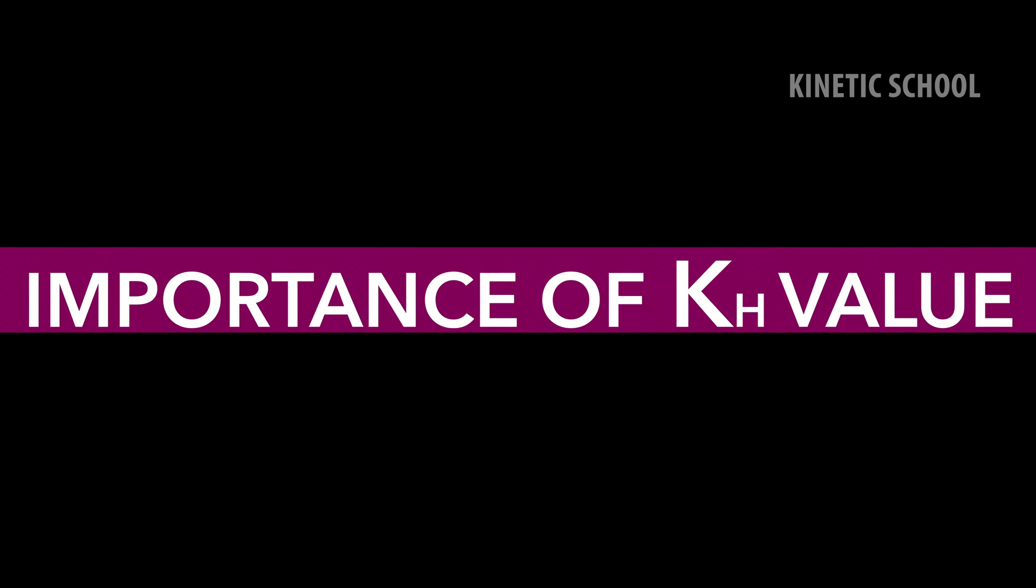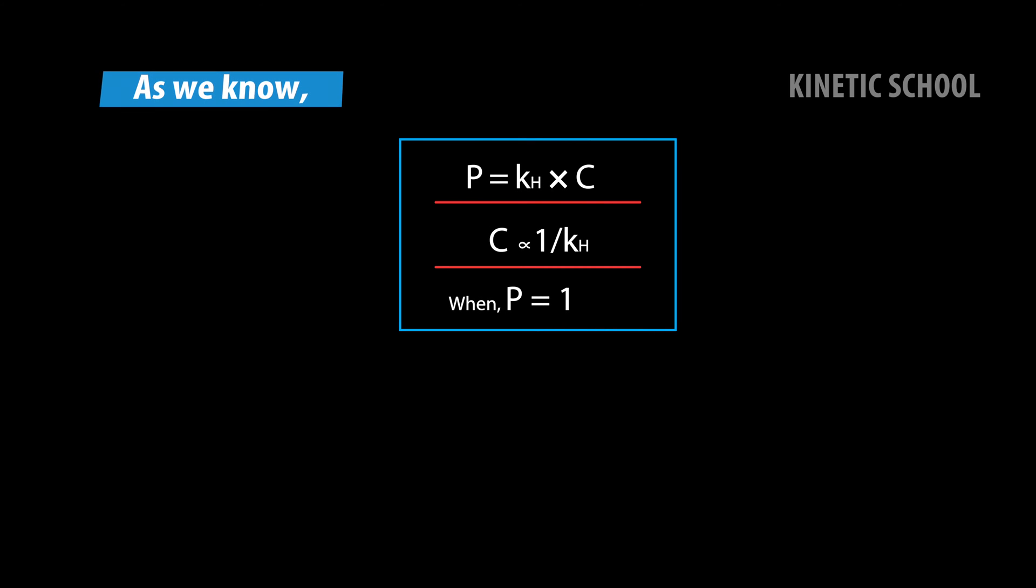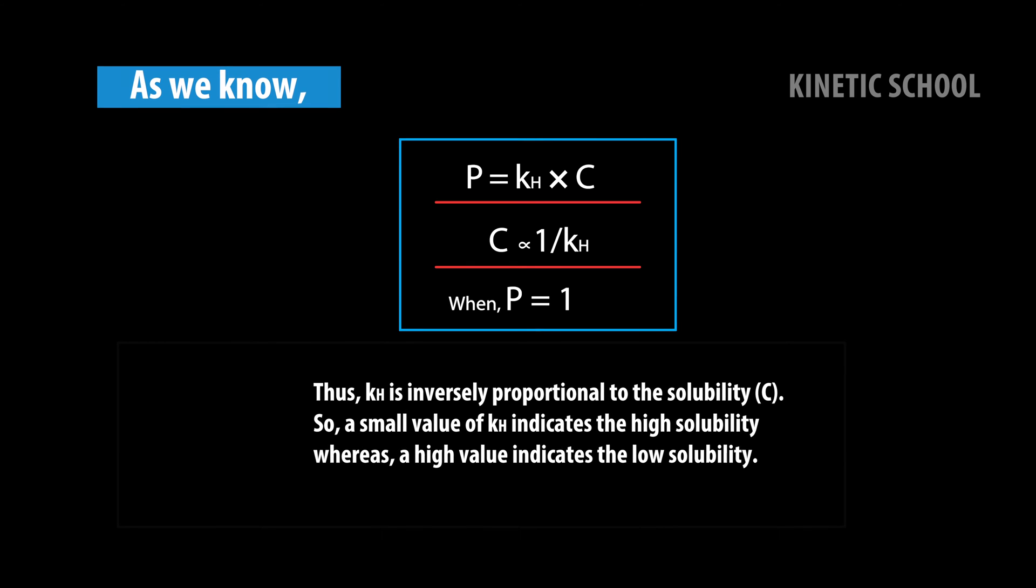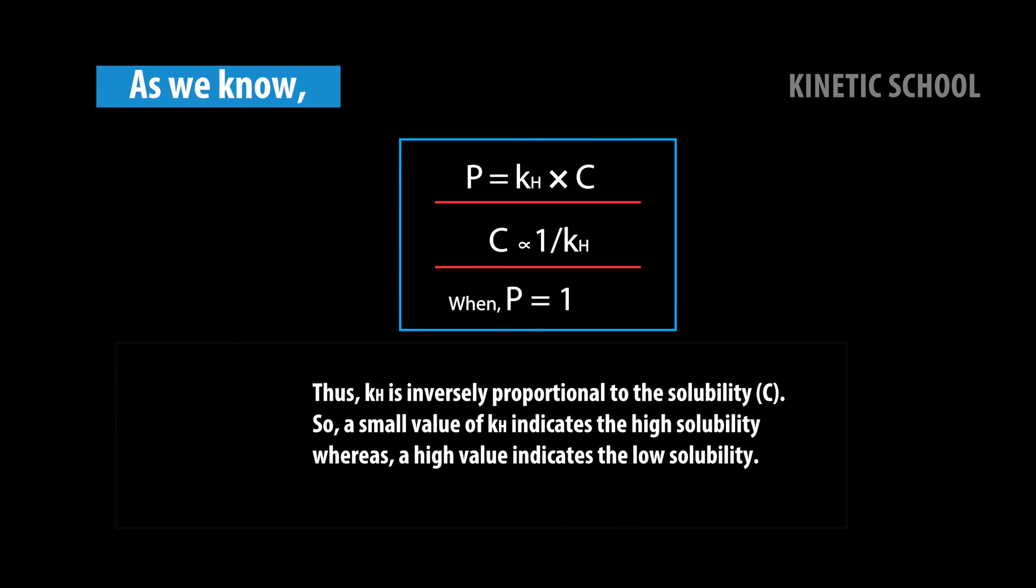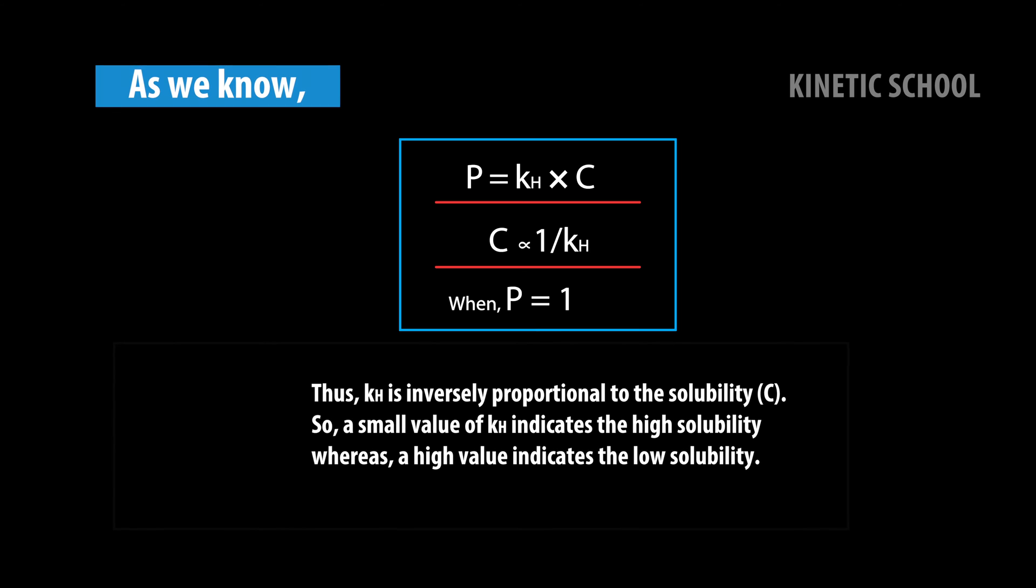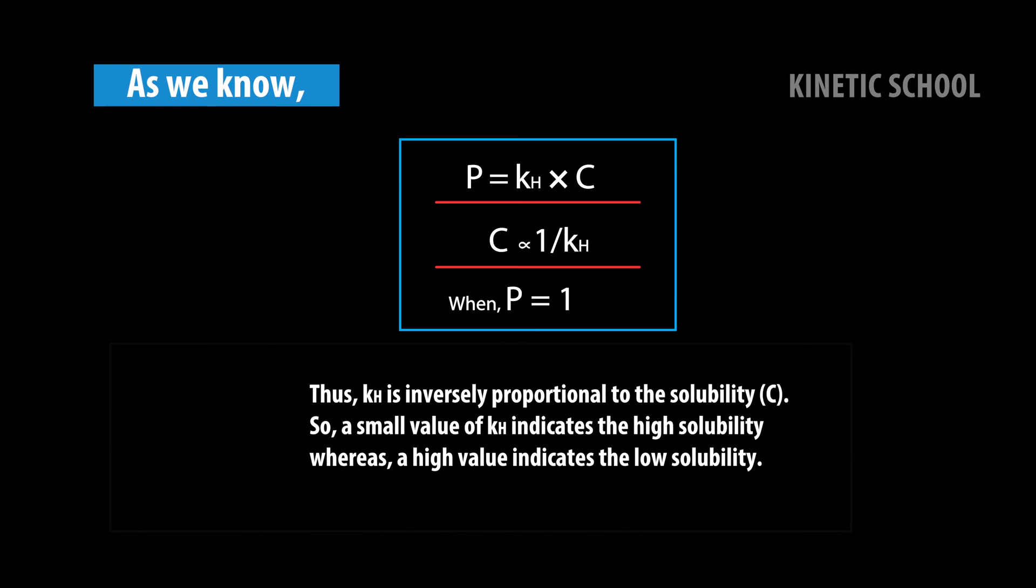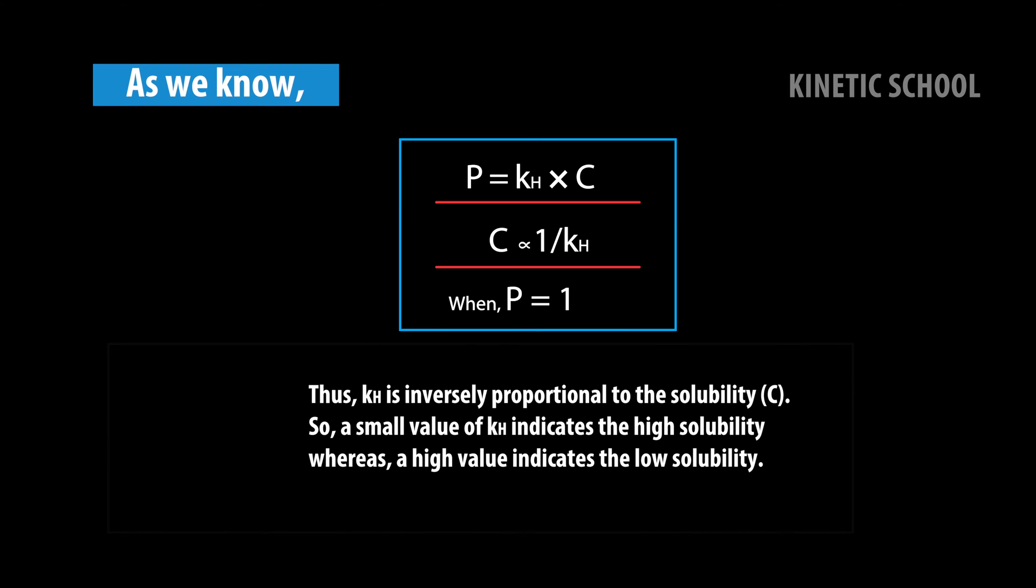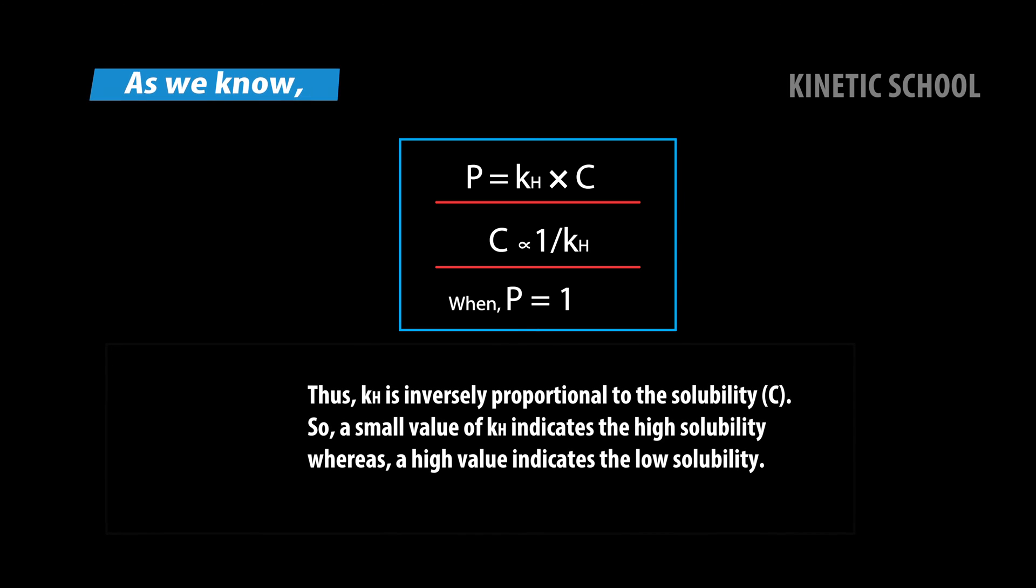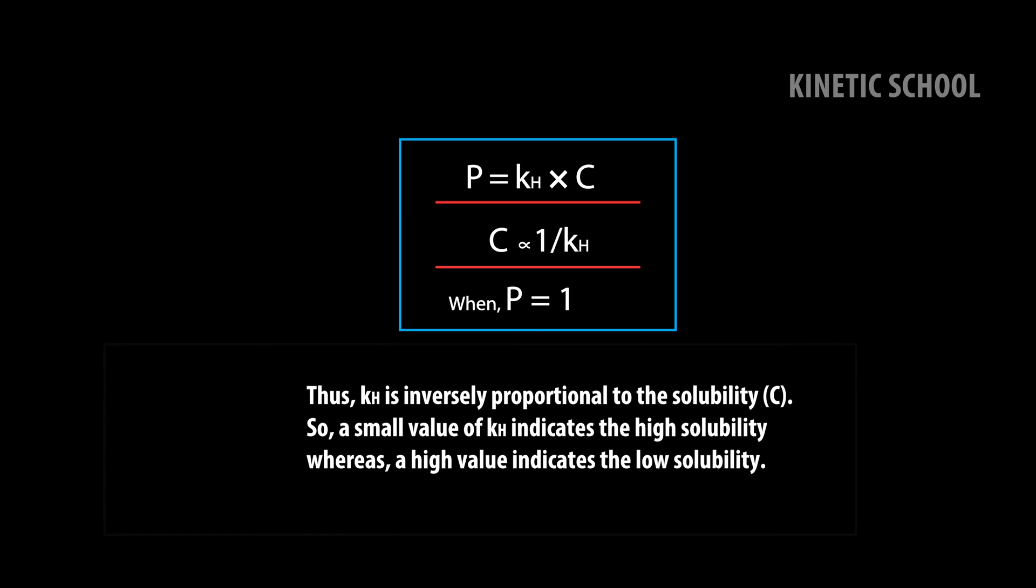Importance of KH value. As we know, P equals KH times C, or C proportional to inverse KH. When P equals 1. Thus, Henry's law constant is inversely proportional to the solubility. So a small value of KH indicates high solubility, whereas a high value indicates low solubility.